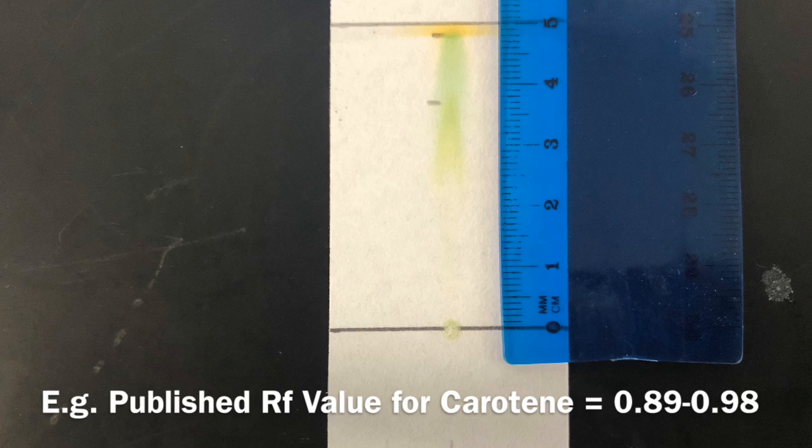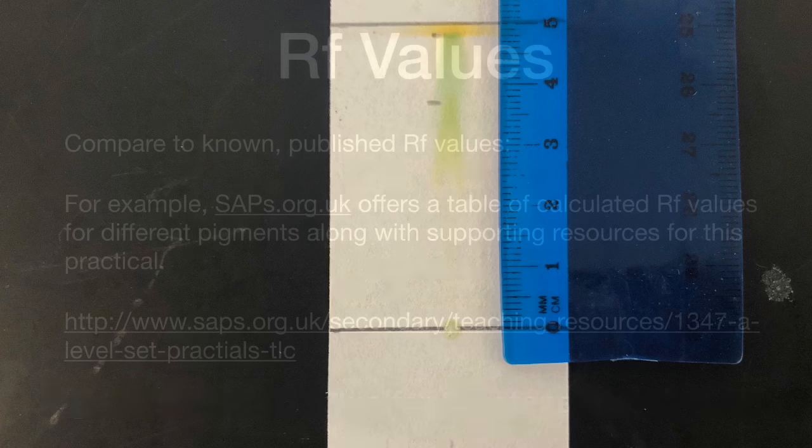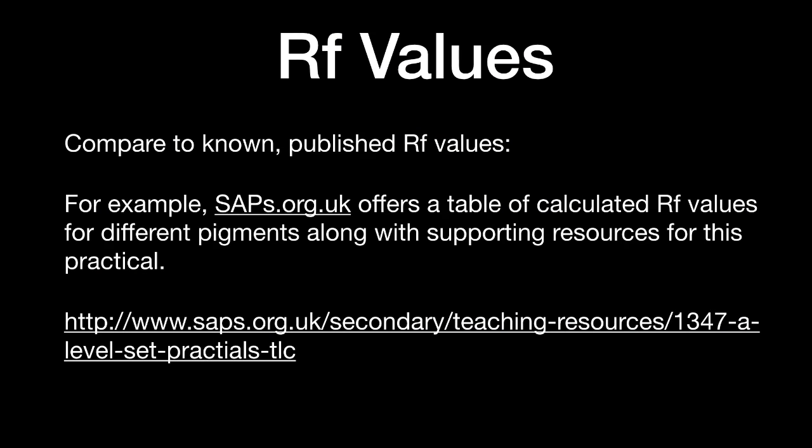You can see it here at the top of the chromatogram, very close to the solvent front. The published RF values are easy to research and look up, and there are many tables available for you to compare against and identify your pigments. For example, this website also offers additional resources, including the written protocol, to help support you when carrying out this practical in the lab.